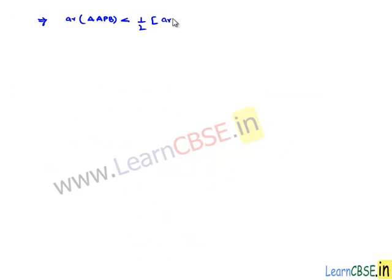Therefore, let us substitute this. Then we get area of parallelogram ABCD here. Finally, we can say that the area of triangle APB is less than half times area of parallelogram ABCD. This is the required proof.